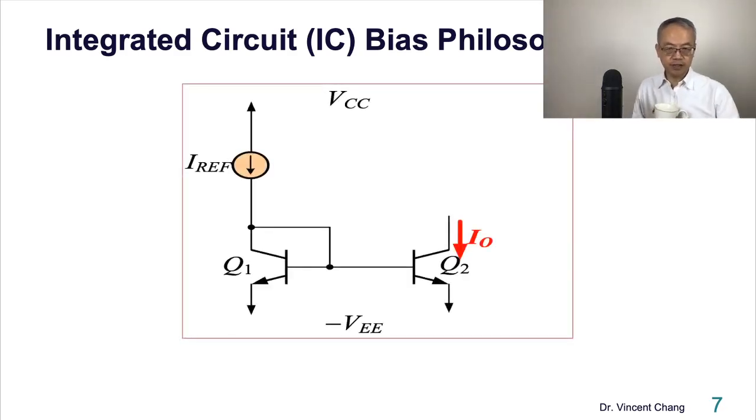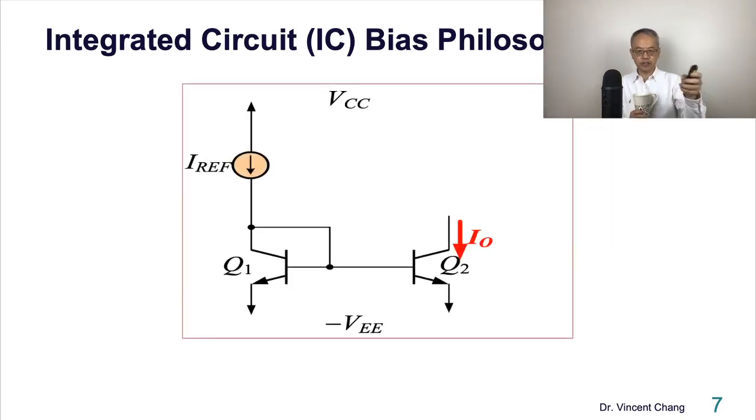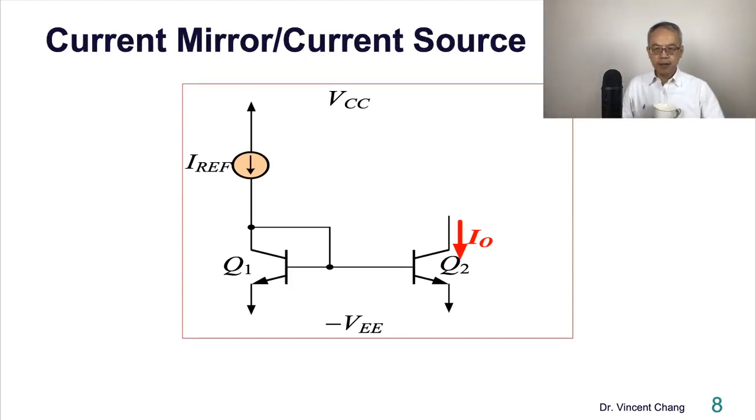So here's the philosophy. What's the philosophy so far? Number one, in the integrated circuit, large or even moderate value of resistors should be avoided. Number two, no coupling capacitor, no bypass capacitor, no big capacitor. So number three, current mirror and current source. You need this kind of circuit called current mirror or current source.